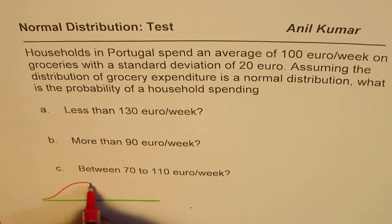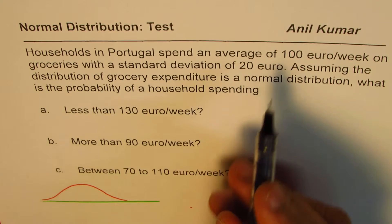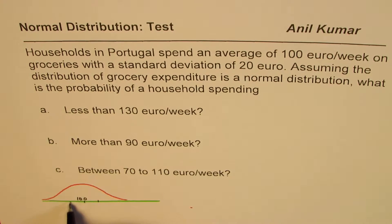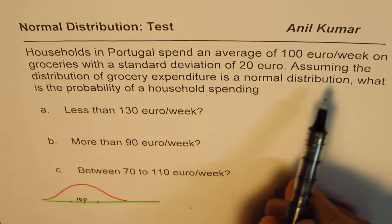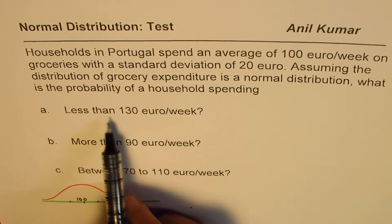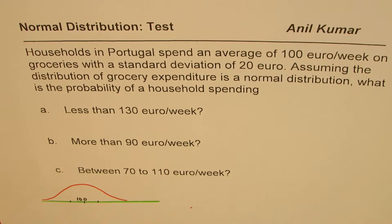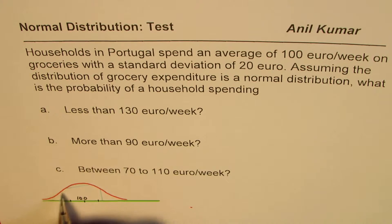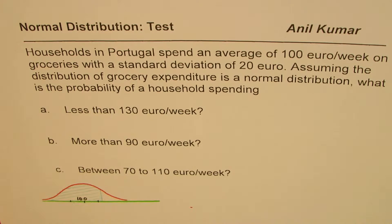Since it's a normal distribution, we can sketch it like a bell curve where the mean is given to us as 100 — so 100 is in the center. With a standard deviation of 20, we have 120 and 80 as one standard deviation away from the mean. What is the probability of a household spending less than 130 euros per week? We are looking for this region, which is beyond the first standard deviation, so we expect a large percentage here.